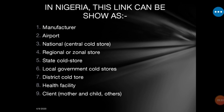From the regional stores, the vaccines are divided into the state stores. Every region has at least four, five, or six states under it. The regions include North Central, North East, North West, South South, South East, and South West.